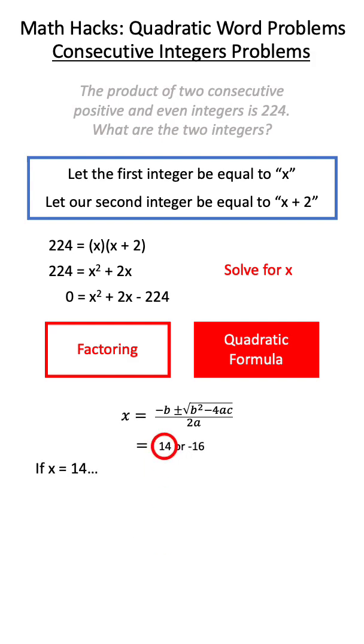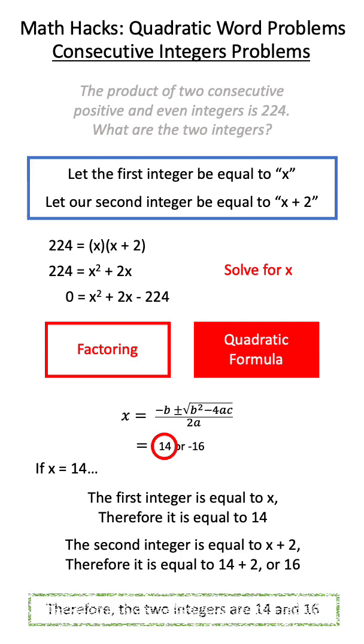Now that we know that x is equal to 14, we can determine that our first integer is equal to 14, and our second integer is equal to 16.